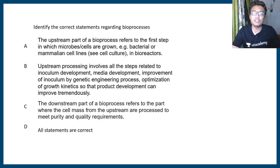Okay now let's move on to the questions. First question says identify the correct statement regarding bioprocesses. So there are four statements and we have to understand which one of these is correct or which ones are correct. The first statement says the upstream part of bioprocess refers to the first step in which microbial cells are grown, example bacterial cell or mammalian cell lines in a bioreactor.